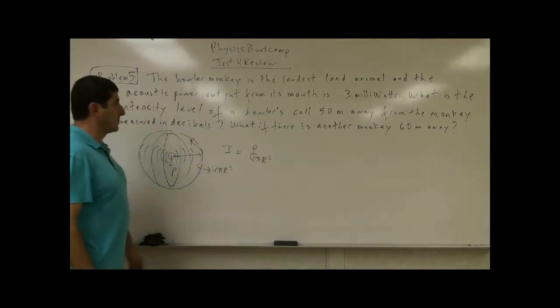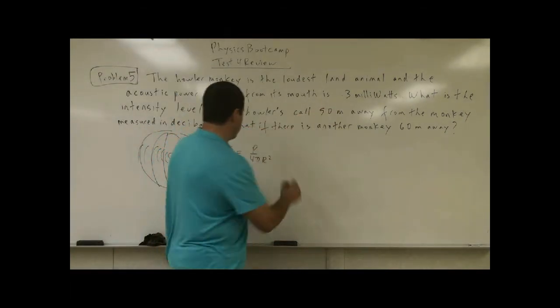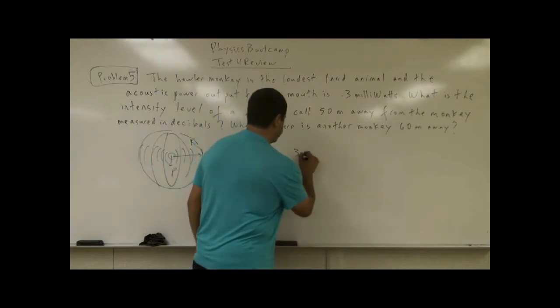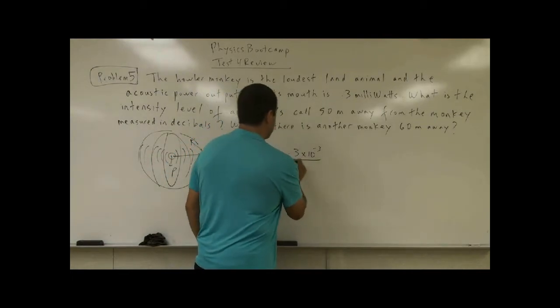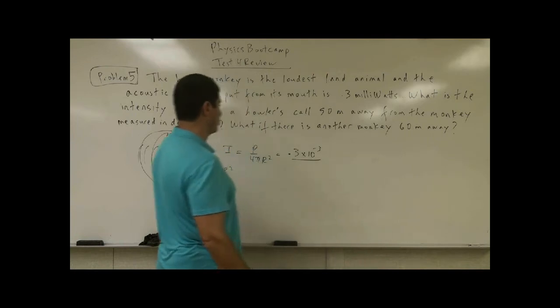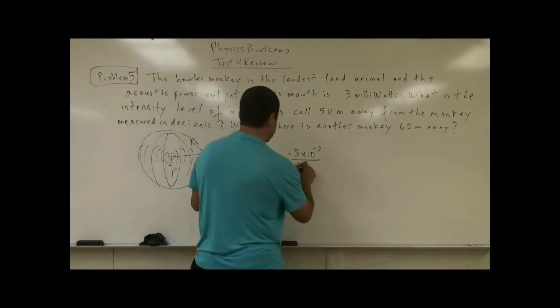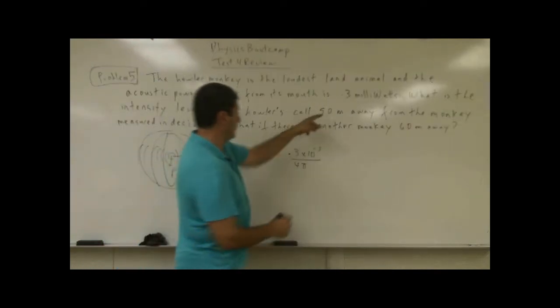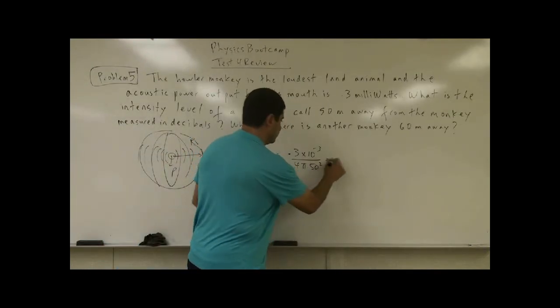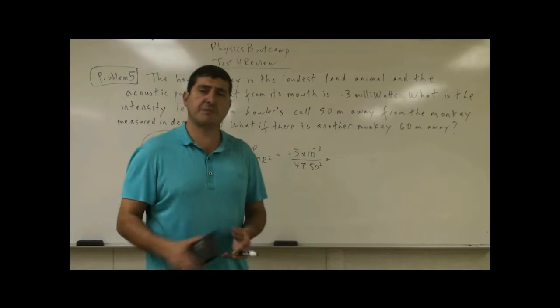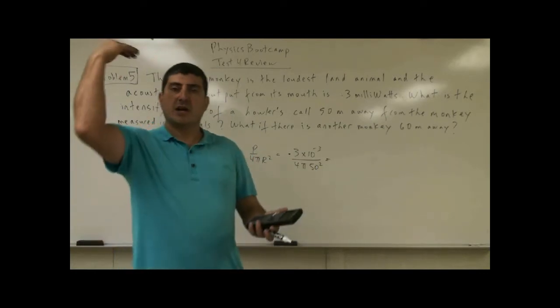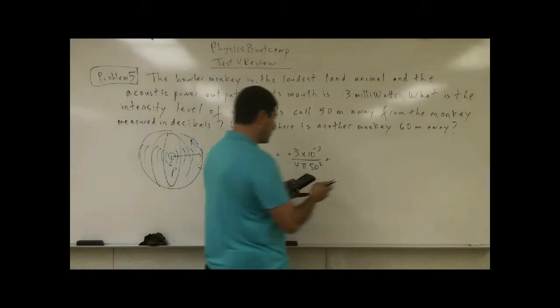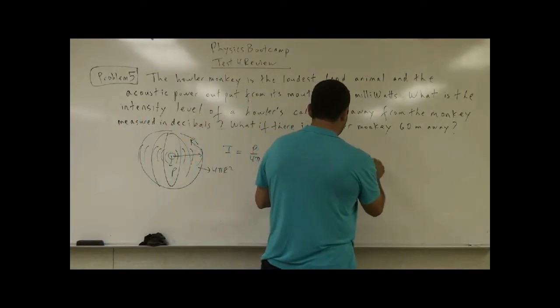So what I have to do in this case is take the 0.3 milliwatts, 0.3, milli is 10 to the minus 3. And I have to say 0.3 times 10 to the minus 3 divided by 4π, and the distance is equal to 50 meters. So 50 squared. That will tell me what's the intensity of the sound wave reaching my ear if I am 50 meters away.